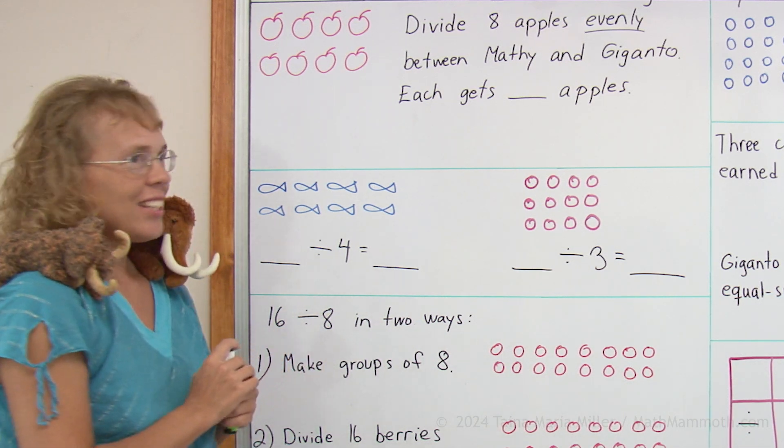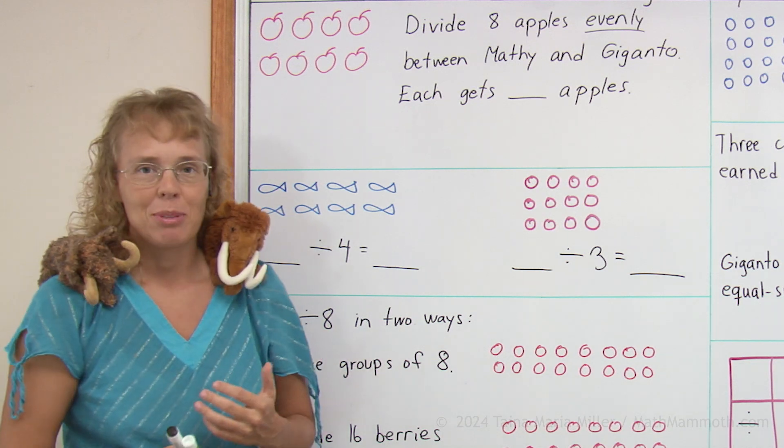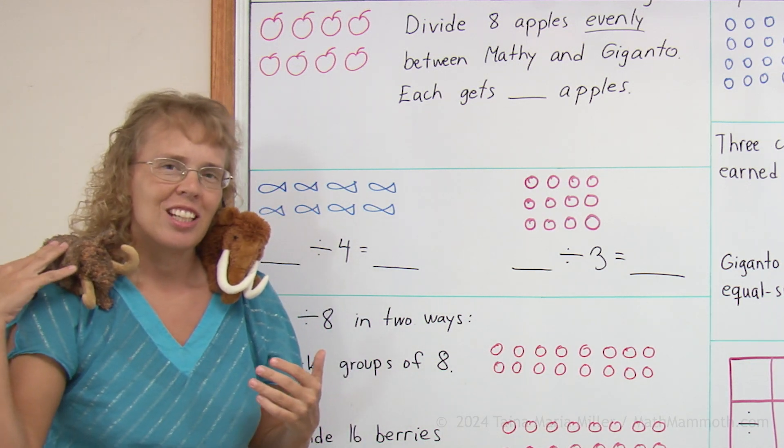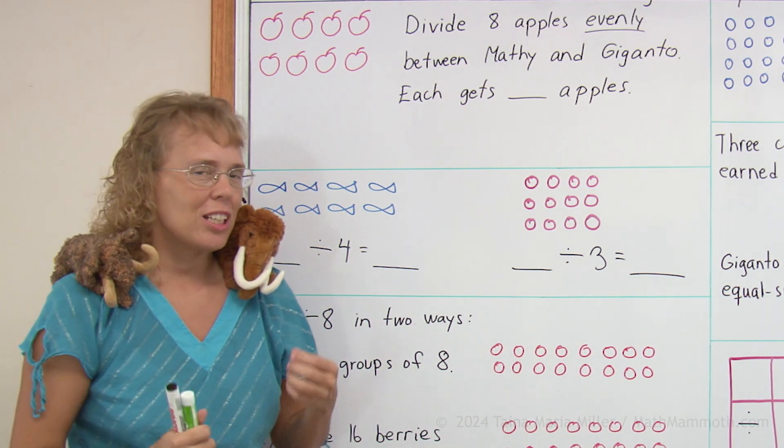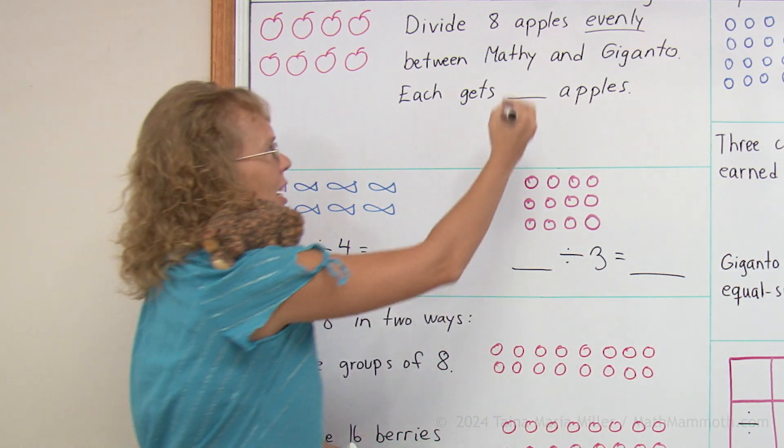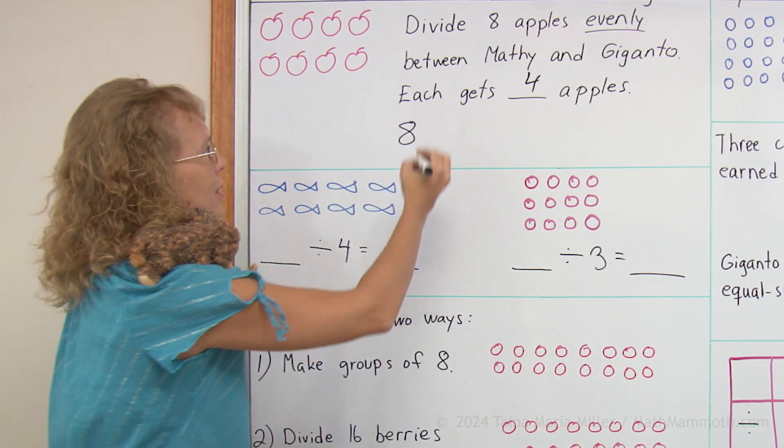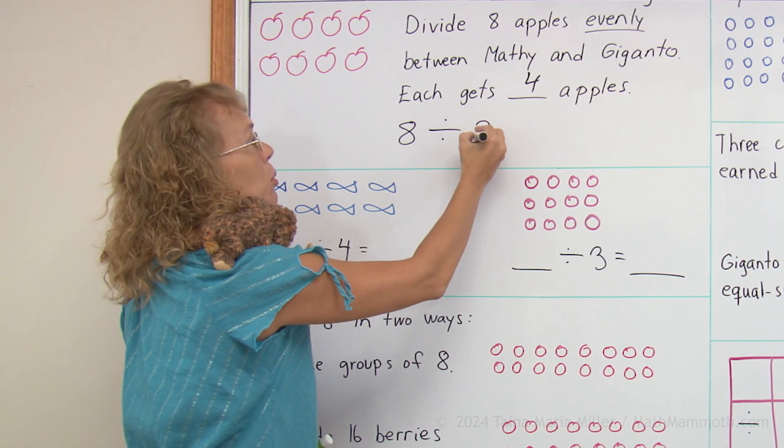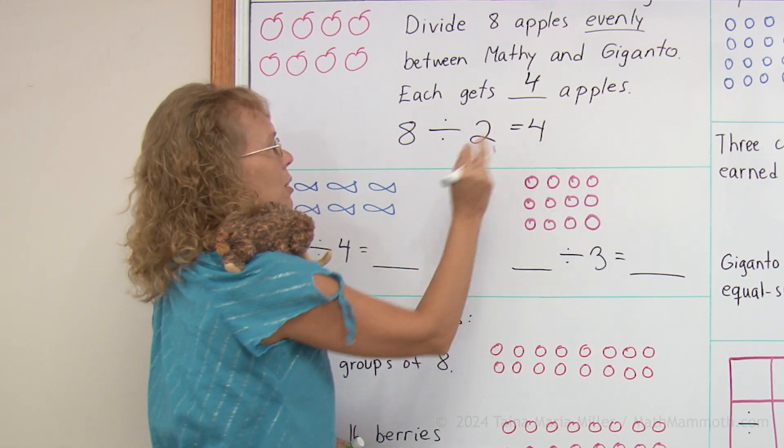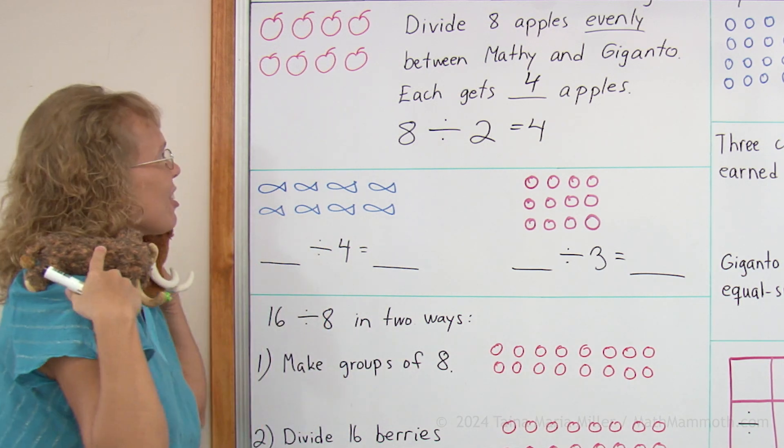For example, here I have 8 apples. Let's say that we divide those 8 apples evenly between Matthew and Giganta. So how many apples will each get? 4 apples, right? That's easy. And we can write a division from this situation: 8 divided by 2 equals 4. 2 goes here because there are 2 mammoths that are sharing those apples.